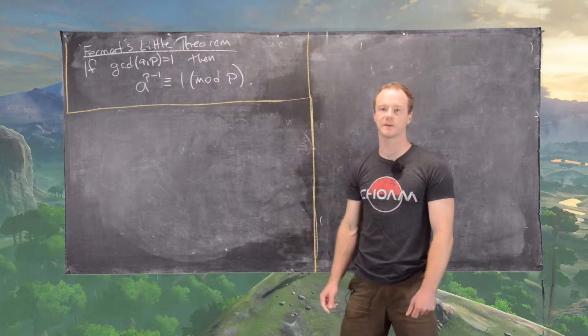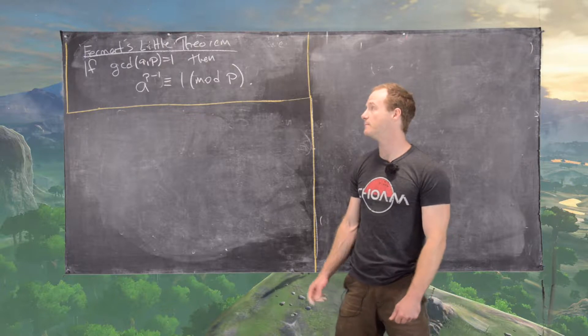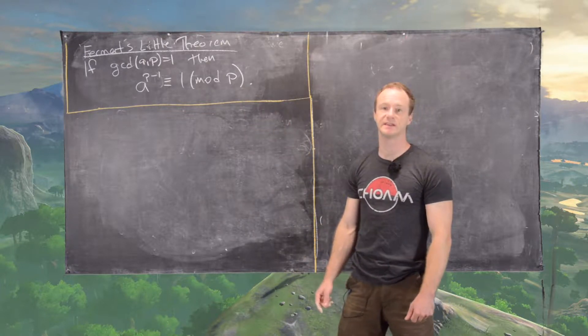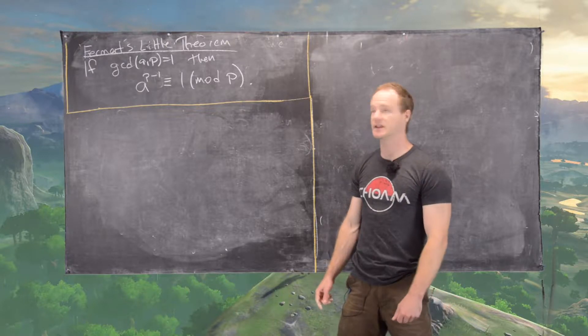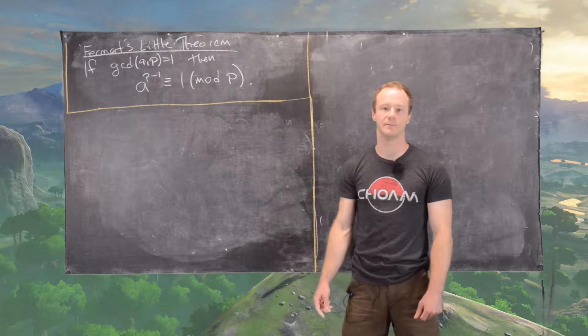Okay, in this video we're going to look at something called Fermat's Little Theorem. So if you take P to be a prime, then if you have the GCD of A and P is equal to 1, where A is any integer, then A to the power of P minus 1 is congruent to 1 mod P.